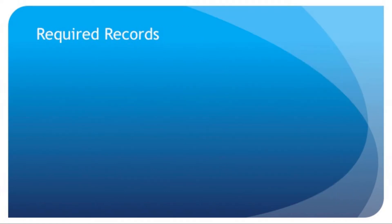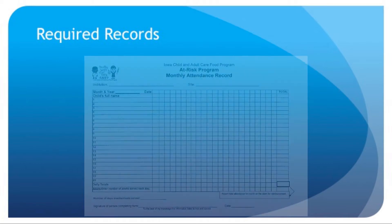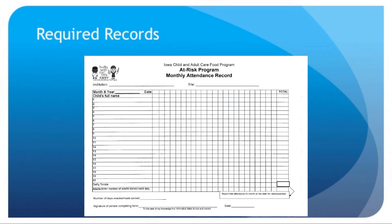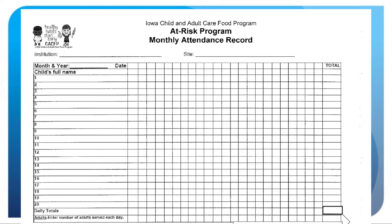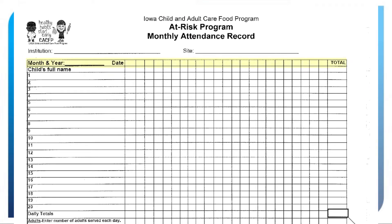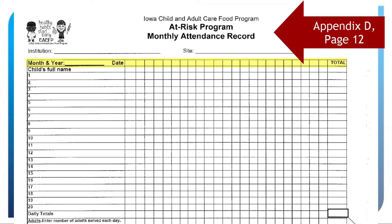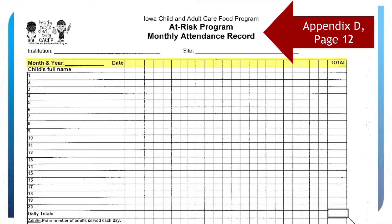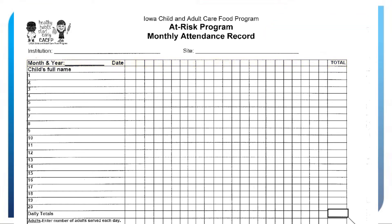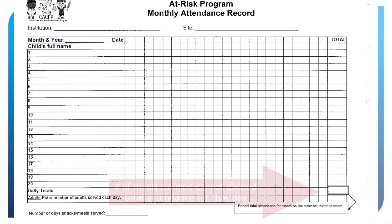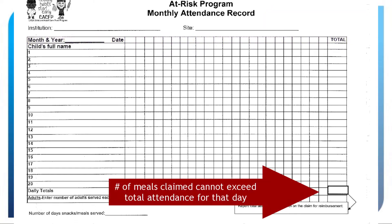Next, we will discuss the CACFP records that must be kept. Daily attendance records are required. Record attendance each day using the form in the manual or a similar form. The number of meals claimed cannot exceed the total attendance for that day.